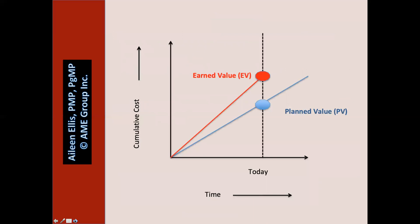Here is an XY bar chart — a different way to look at this. The blue line is the planned value across the life of the project; the red line is the earned value, or how much work is complete. The vertical dotted line is today. The blue oval shows what should be complete as of today (planned value); the red oval is what is complete as of today. We've completed more work than planned — this would be a positive schedule variance; we are ahead of schedule.